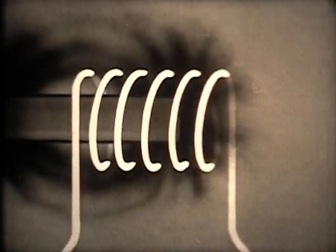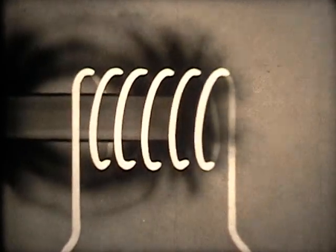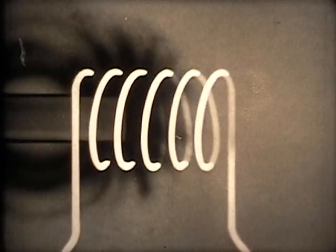And there is no current when the field is held stationary in the coil. We get a current only when the magnetic field is moving across the wire in one direction or the other.